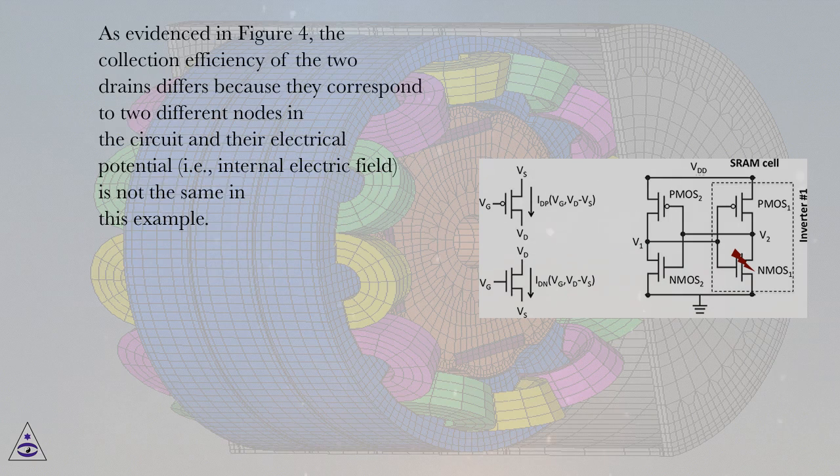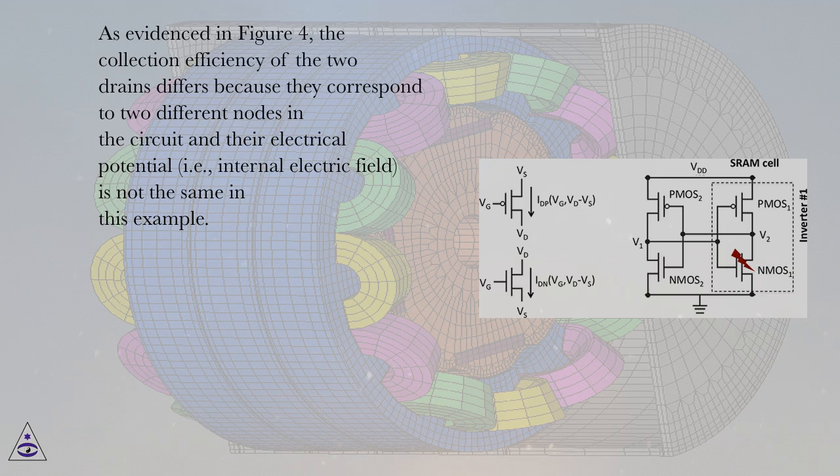As evidenced in Figure 4, the collection efficiency of the two drains differs because they correspond to two different nodes in the circuit and their electrical potential, i.e., internal electric field, is not the same in this example.